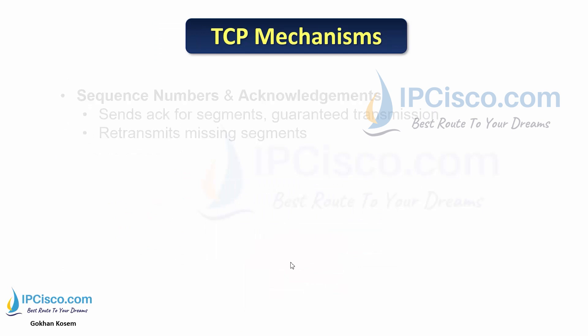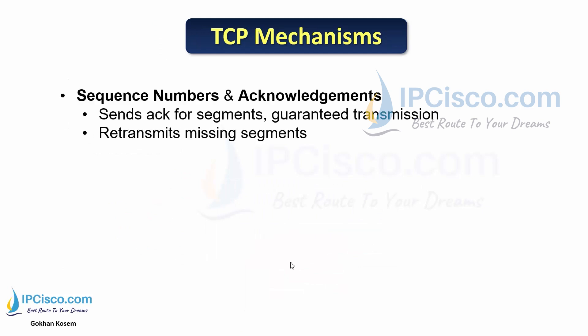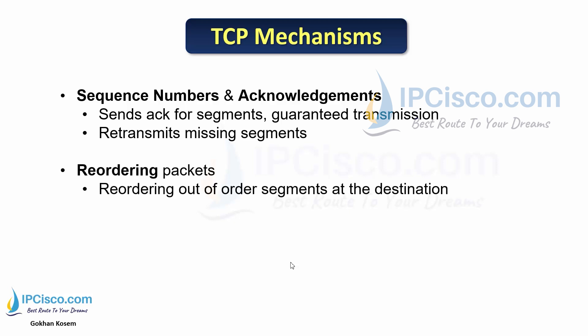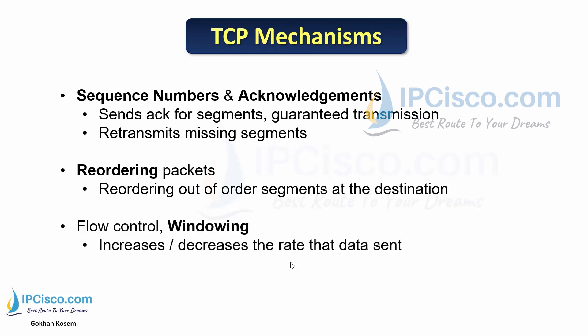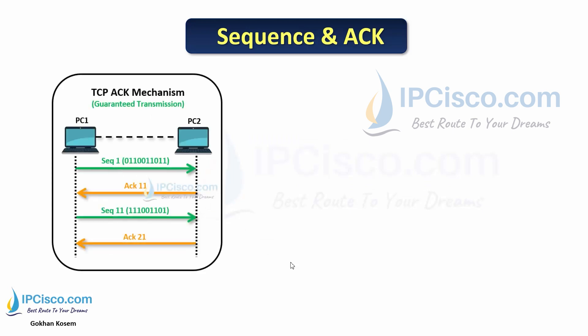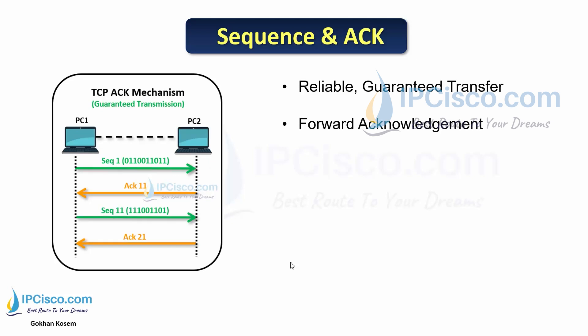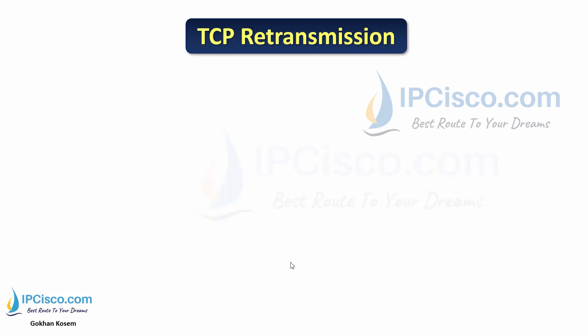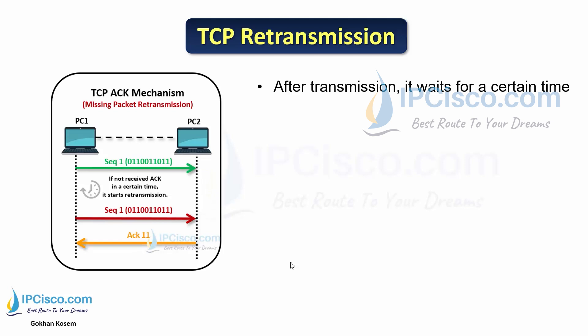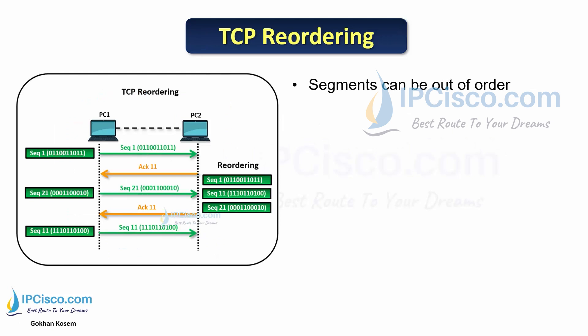There are different mechanisms used in TCP. One of them is sequence numbers and acknowledgements. ACKs are sent for segments for guaranteed transfer, and if there are any missing segments, they are retransmitted. Another mechanism is reordering — received data is ordered at the receiver side if it arrives out of order. The sender side waits after sending data; if it does not receive any ACK, it sends the same data again. This is the retransmission mechanism.